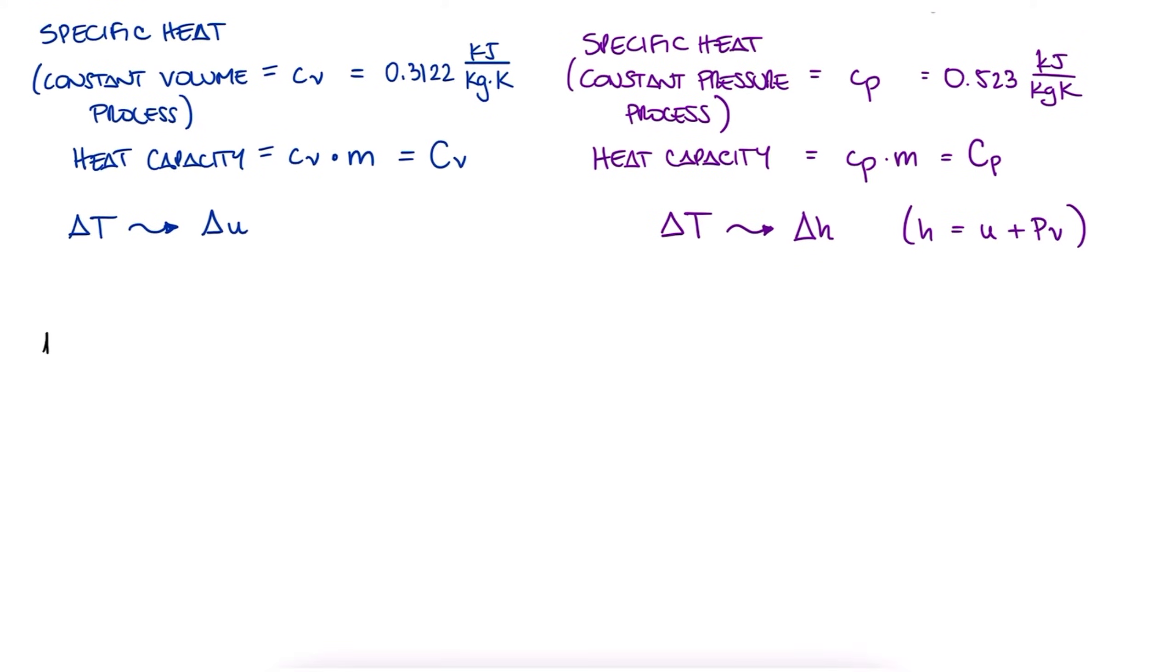The differential form of the first law of thermodynamics, or energy conservation equation, is du equal to delta q minus delta w, or delta q minus p dv. This is the same as saying delta q is equal to du plus p dv, or even just dh for the case of constant pressure systems.